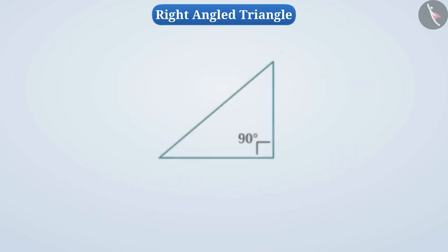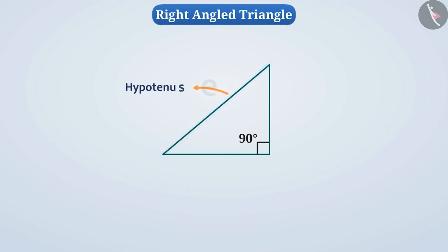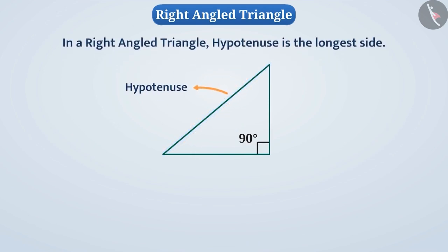In a right angle triangle, sides are given special names. The side opposite the right angle is called the hypotenuse. In a right angle triangle, the hypotenuse is the longest side. The sides that are smaller in measure than the hypotenuse are called the legs of the right angle triangle.